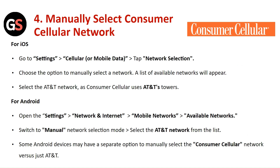For Android, open Settings, then go to Network and Internet. Go to Mobile Network and tap on Available Networks. Switch to manual network selection mode and select AT&T network from the list. Note that some Android devices may have a separate option to manually select the Consumer Cellular network versus just AT&T.